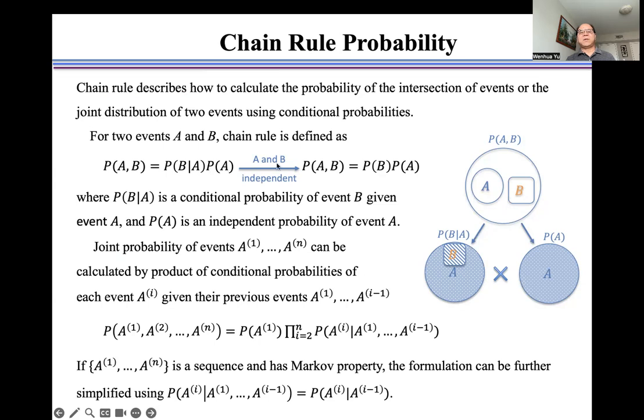If A and B are independent, the joint probability of A and B equals the product of independent probability of B and independent probability of A.